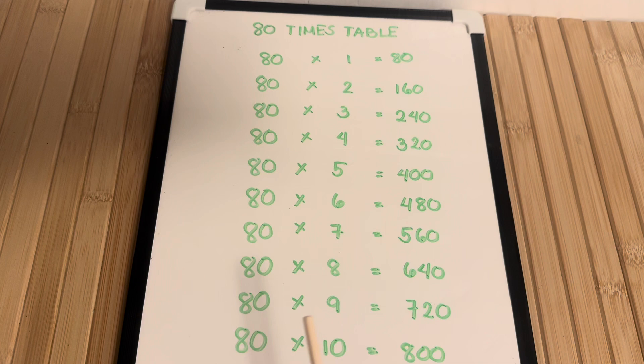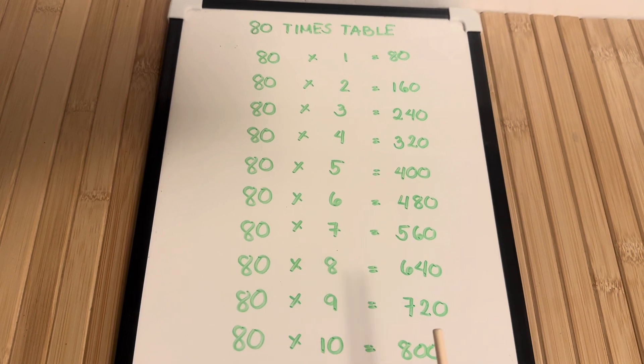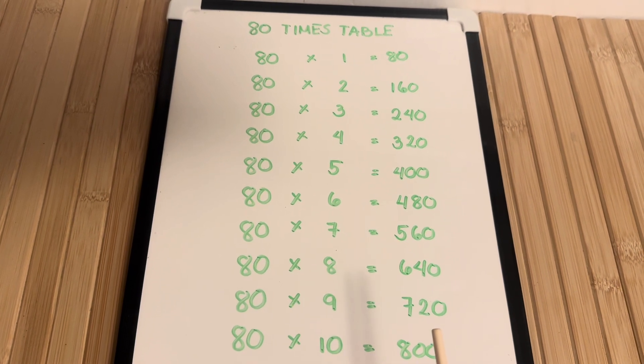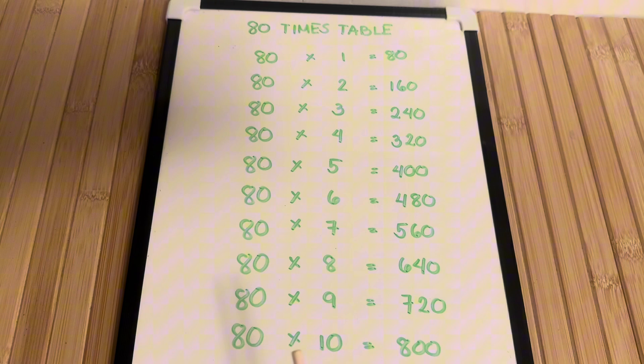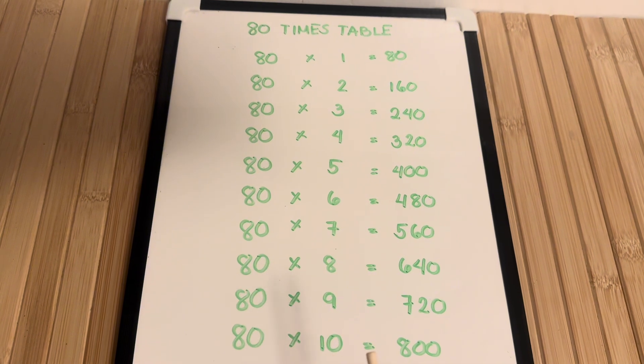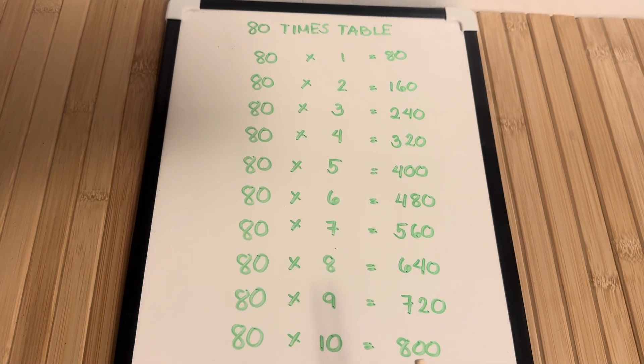80 times 9 is equals to 720. And lastly, 80 times 10 is equals to 800.